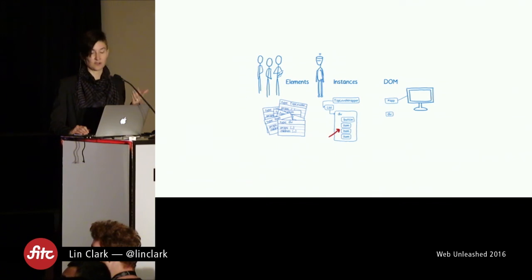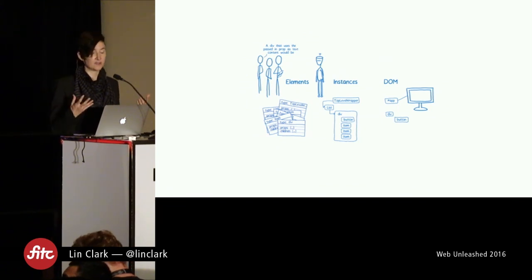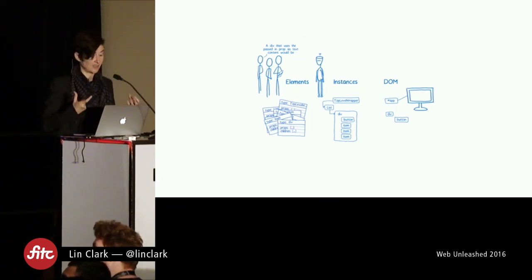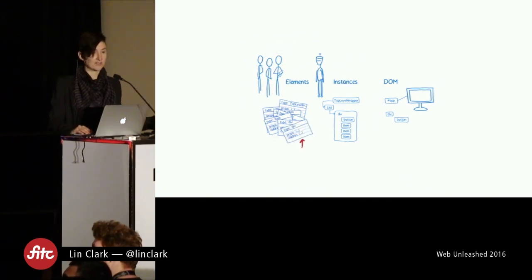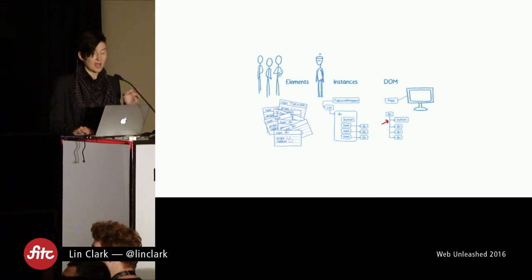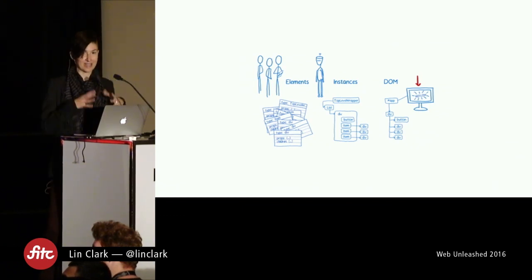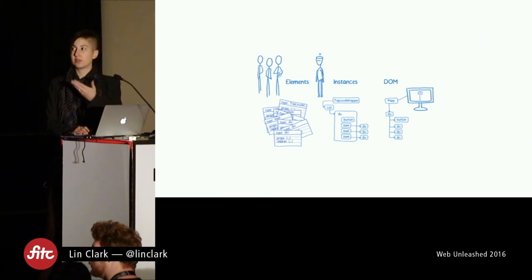Now it's time to make the DOM elements for all of these instances. For button, it's easy — React knows what a button should be. But for item, it has to ask via render again. Item responds that it needs a div with the passed-in property as text content. React creates the div element, instance, and DOM node, and does this for all three items. Then it connects the children to their parent, connects the parent up to the container — and this is what triggers the reflow. Notice it waits until the end to trigger it, so the main thread can handle all those changes together.